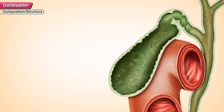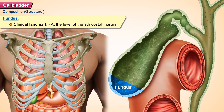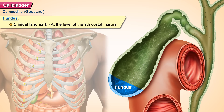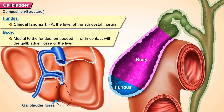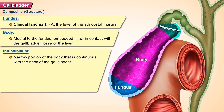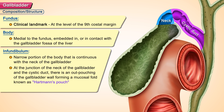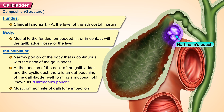Composition or structure: The fundus — a clinical landmark for the fundus of the gallbladder is at the level of the 9th costal margin. The body of the gallbladder is medial to the fundus and is embedded in or in contact with the gallbladder fossa of the liver. The infundibulum is the narrow portion of the body that is continuous with the neck of the gallbladder. At the junction of the neck and the cystic duct, there is an outpouching of the gallbladder wall forming a mucosal fold known as Hartmann's pouch, which is the most common site of gallstone impaction.